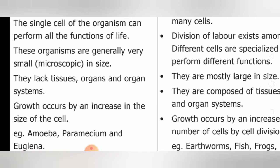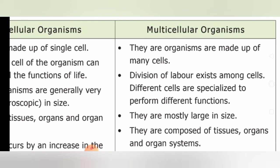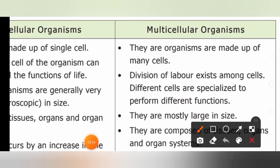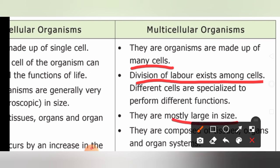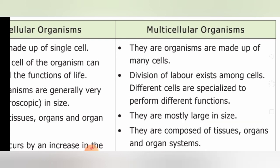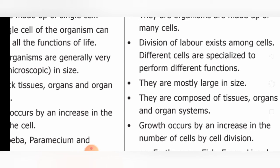Now, multicellular organisms. Multicellular organisms are made up of many cells. Division of labor exists among the cells — different cells are specialized to perform different functions. Each and every function is carried out by a set of cells, so there is a division of labor. They are mostly large in size, and they are composed of tissues, organs, and organ systems.